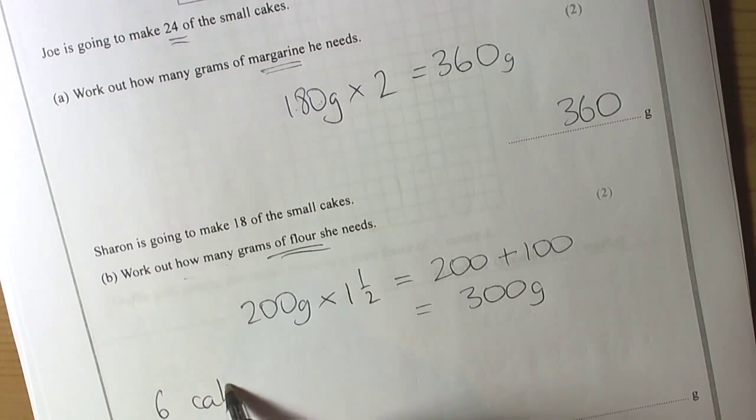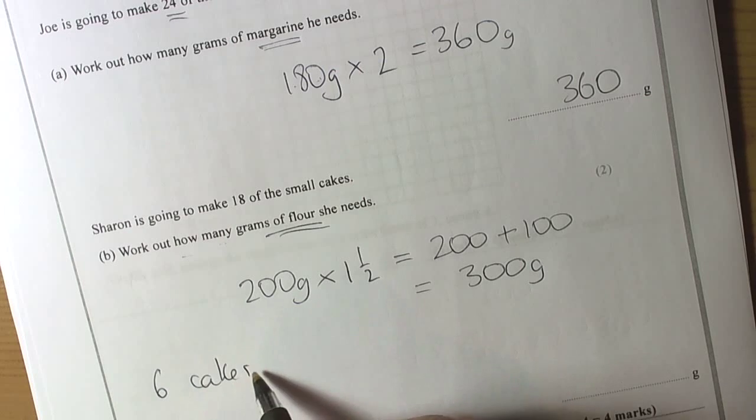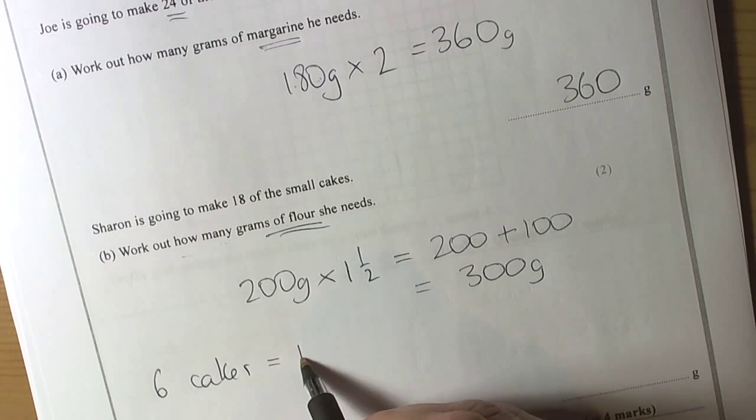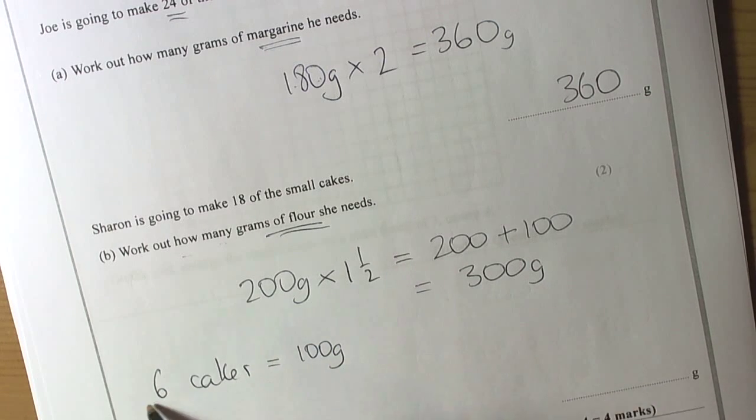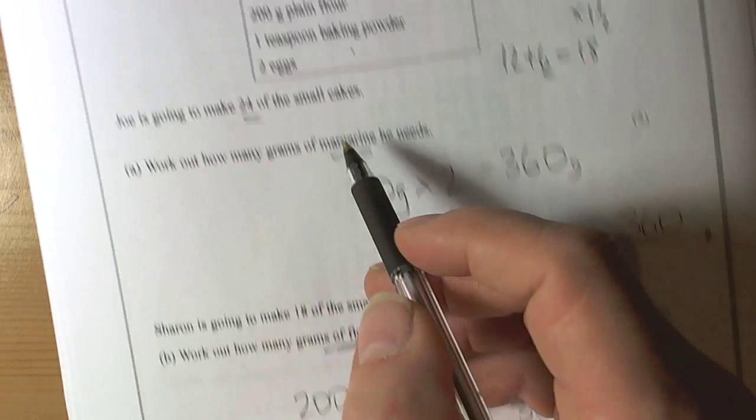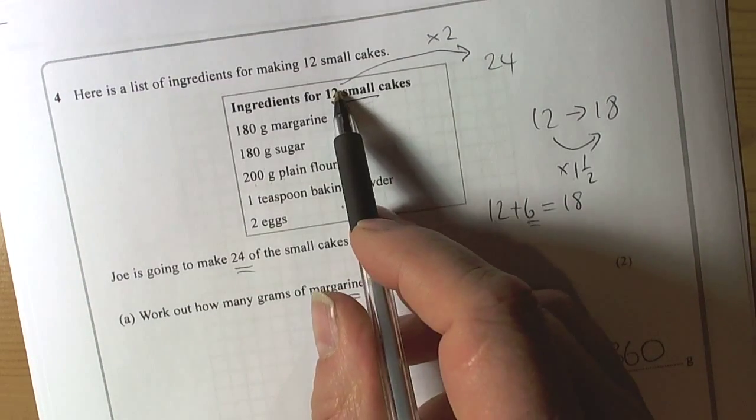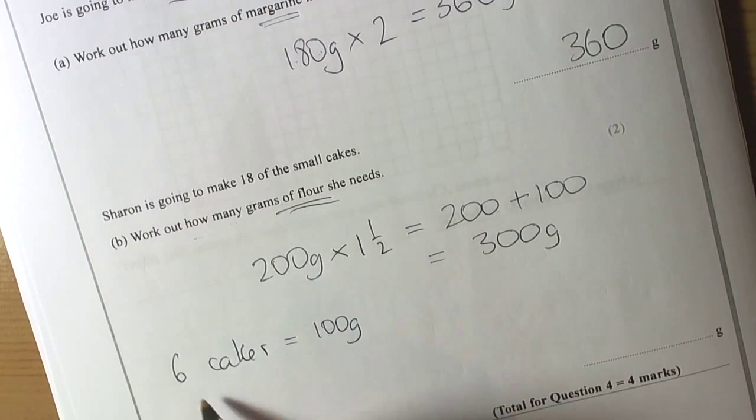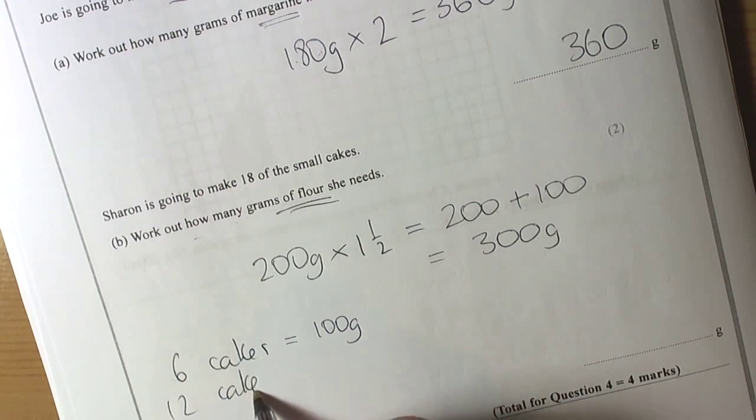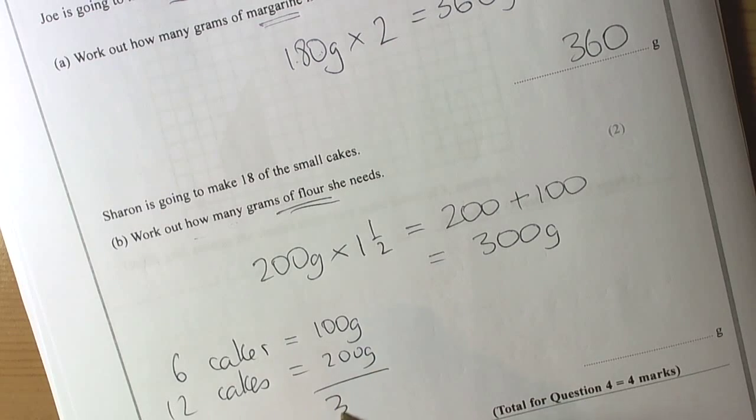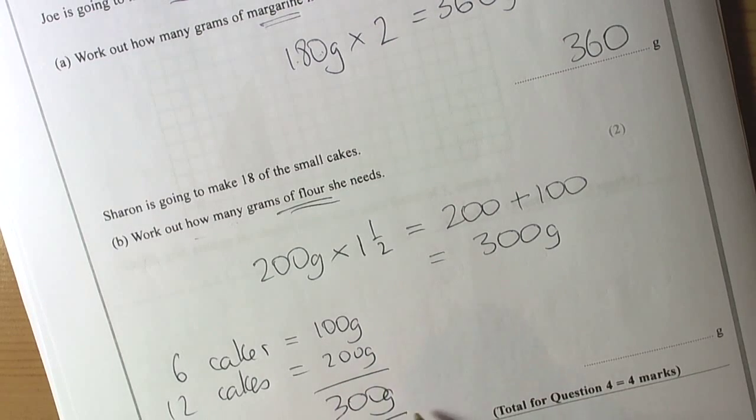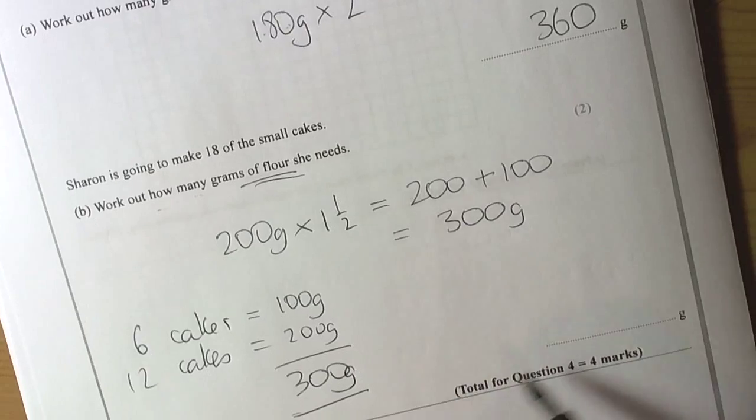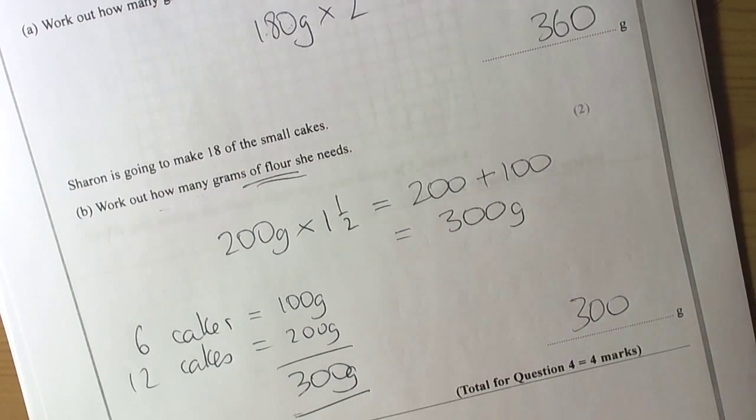If you did the half the recipe approach, 6 cakes needs 100 grams. That is half the recipe value. The original recipe had 200 grams for 12 cakes. Half that then you get 300 grams. So either technique will give you 300 grams for the amount of flour.